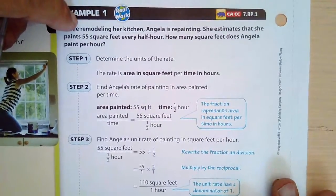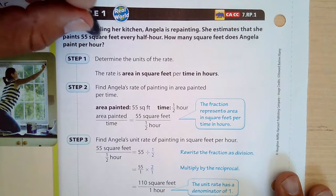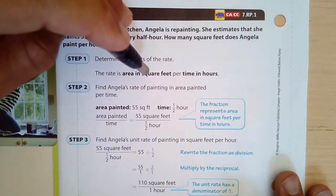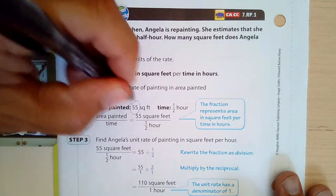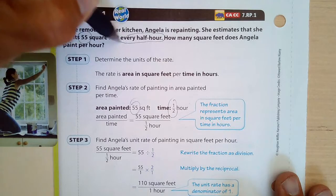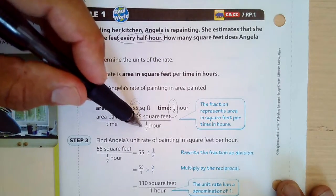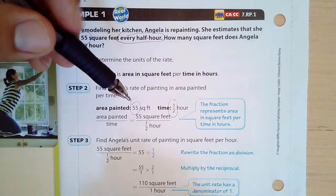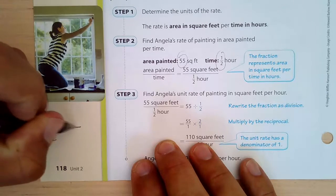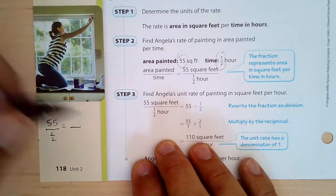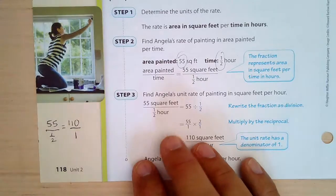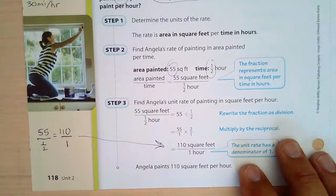Example one: Angela is repainting her kitchen and estimates she paints 55 square feet every half hour. How many square feet does she paint in one hour? We set up the rate as 55 square feet per one-half hour. Simply doubling: if half an hour doubles to one hour, then 55 square feet doubles to 110 square feet.